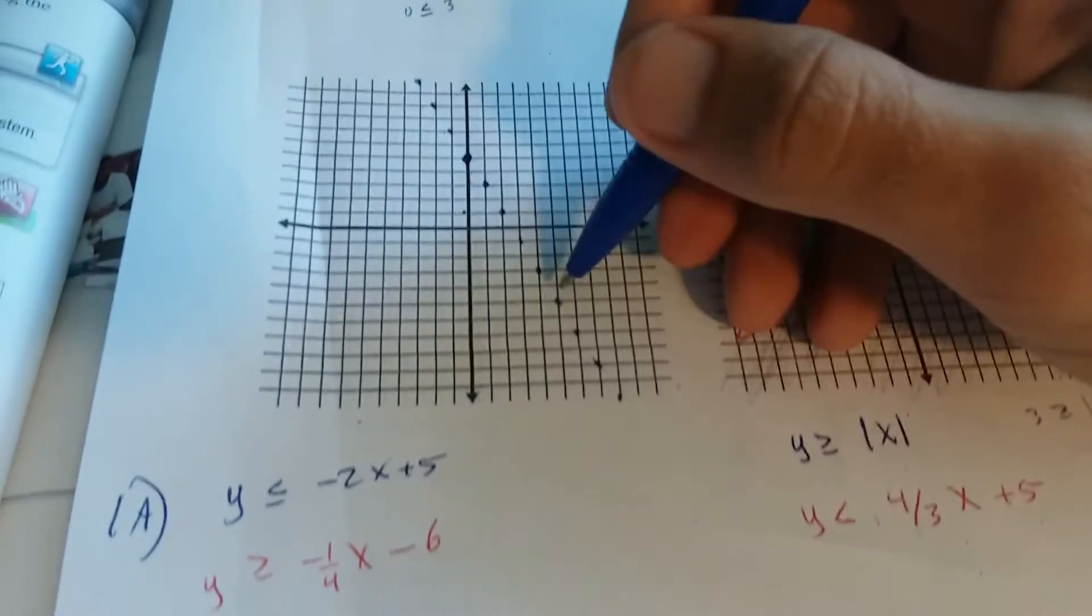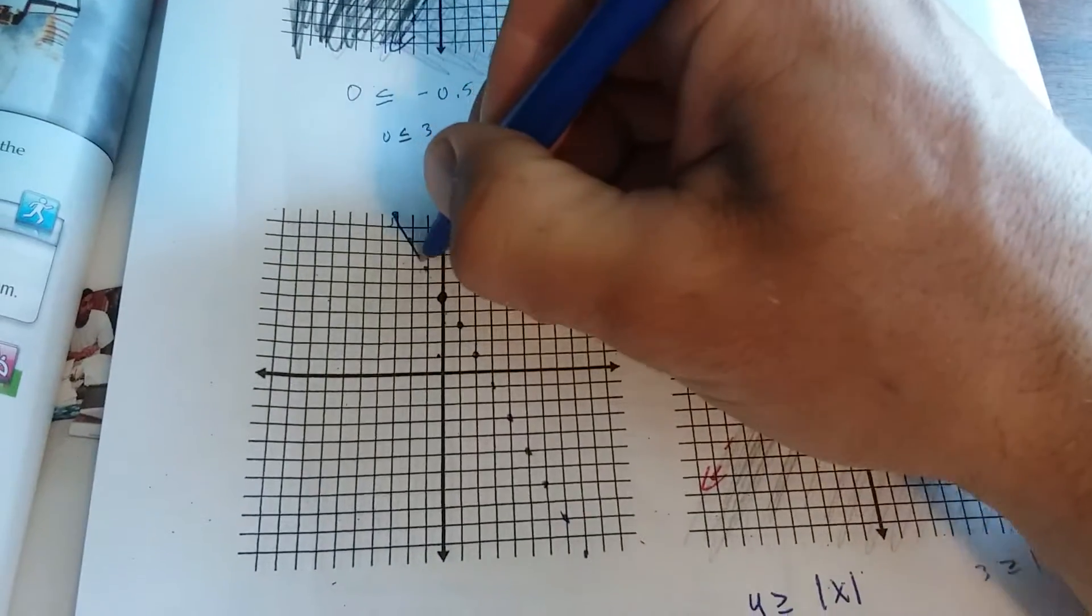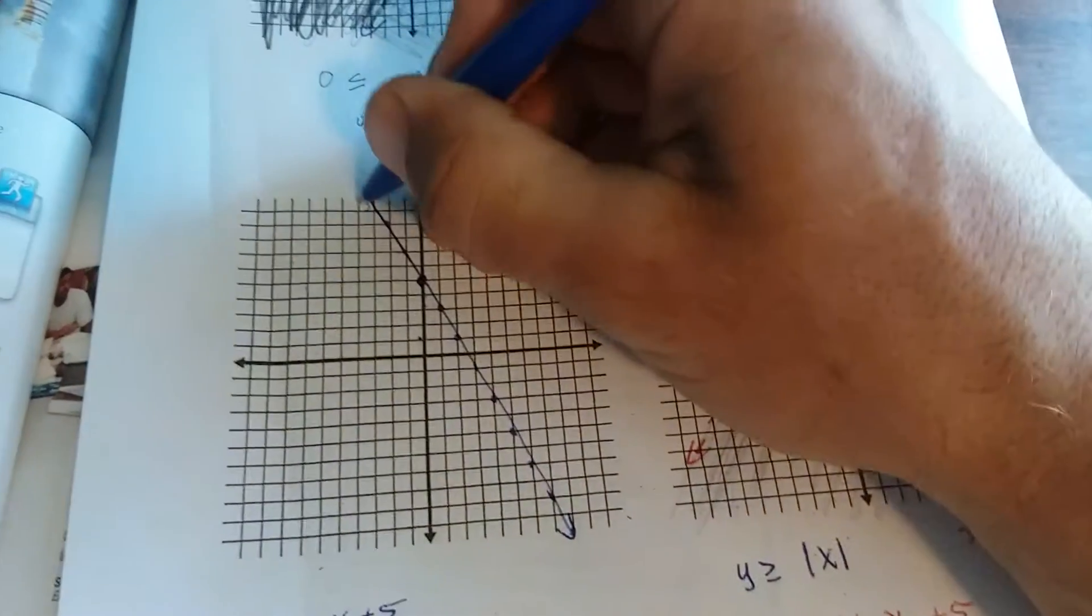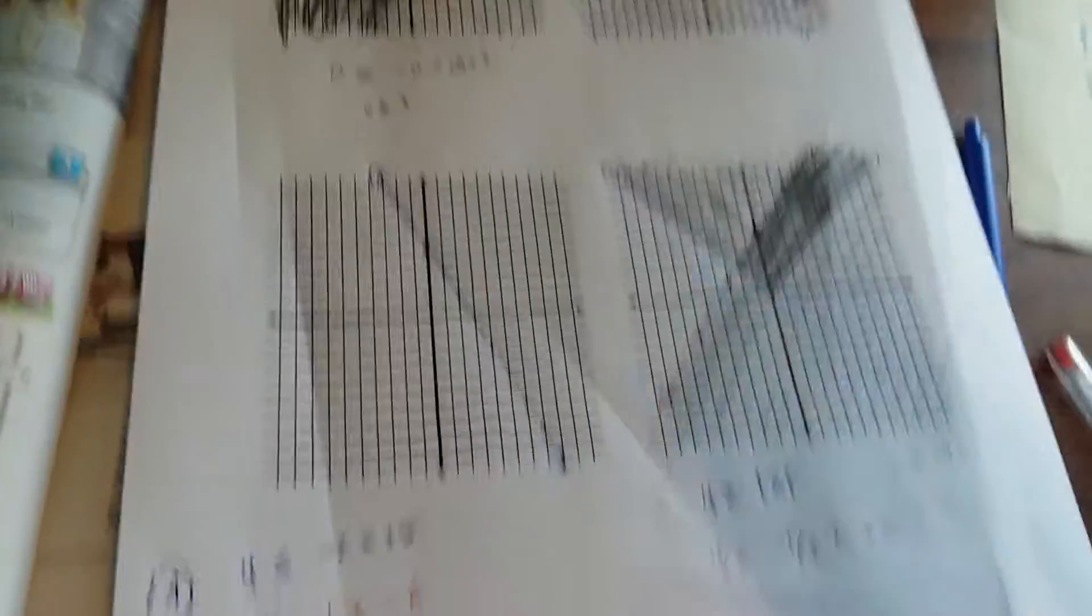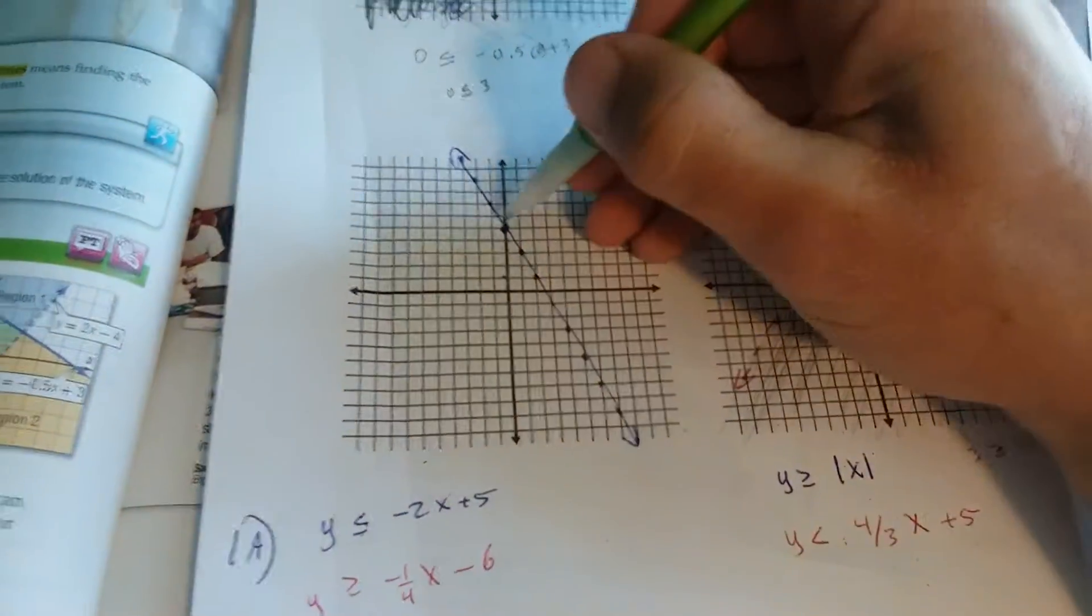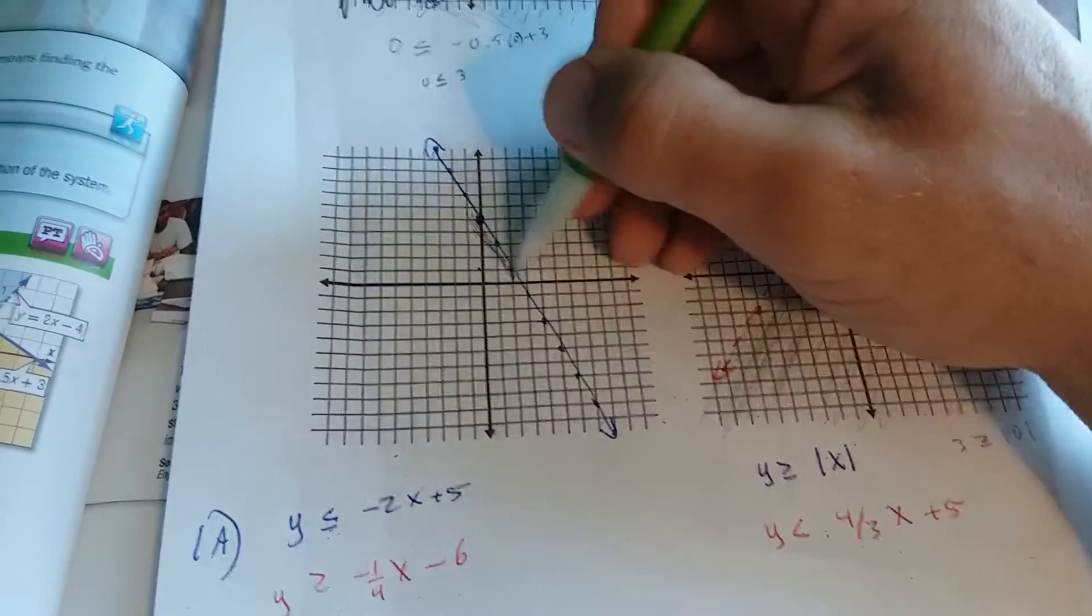It's going down to the right because you're negative. You have the equal bar under it, so you're going to have a solid line here. And then you are going to shade. Since you have the less than symbol, pick a dot on the line right here. You're going to shade under it because you have y is less than that.